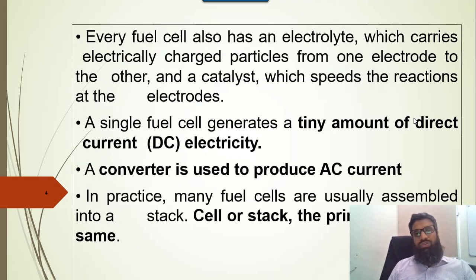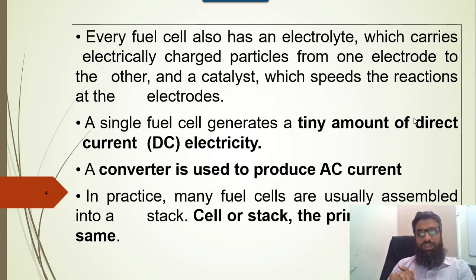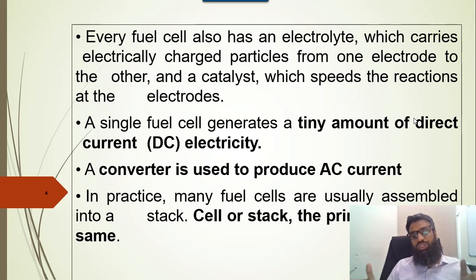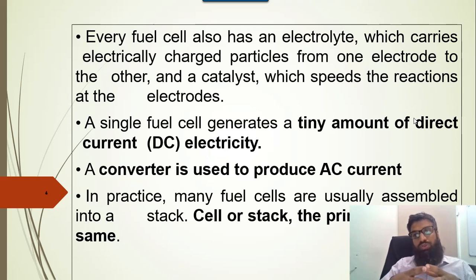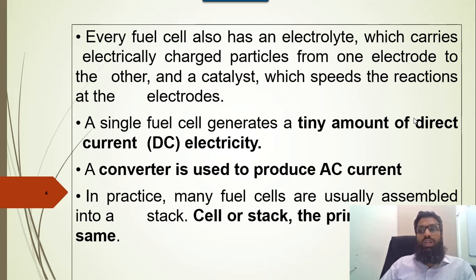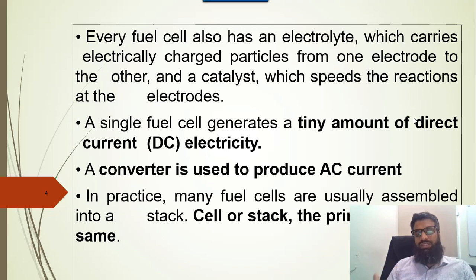Every fuel cell produces DC current, but the quantity of the DC current is very low. So in order to use the fuel cell as a source of energy, we usually use stacks of cells — multiple cells in series or parallel configuration — to produce a huge amount of electricity. It produces DC, so in order to consume it for AC load we need an inverter to convert this DC into AC for useful purpose.